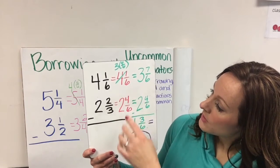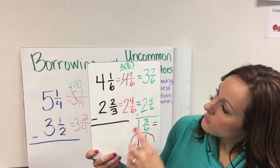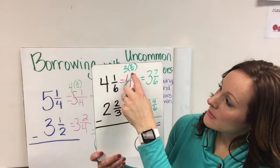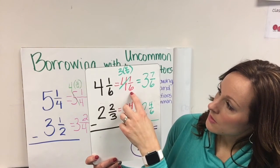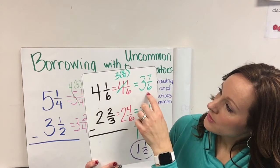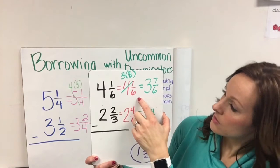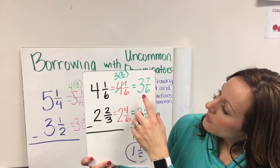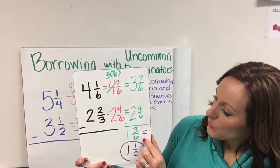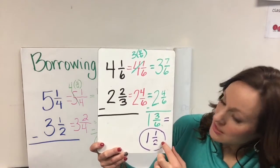So then I had 4 and 1 sixths and 2 and 4 sixths. I couldn't subtract 4 from 1, so I had to borrow. I crossed out my 4, turned it into a 3, and I represented that one unit that I borrowed as 6 sixths, because we're working with 6 here. Then I turned this into 3 and 7 sixths, because I added 6 sixths to the 1 sixths that was here, which equaled 7 sixths. So now I have 3 and 7 sixths minus 2 and 4 sixths, and when I worked that out, I came up with 1 and 3 sixths. So then I had an extra step because it had to reduce, and I ended up with 1 and 1 half.